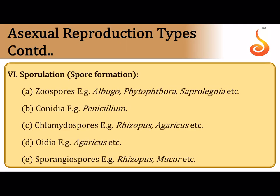Sporulation also comes under asexual reproduction because there is no formation of gametes or fusion. Zoospores are motile spores. Conidia are non-motile thin-walled spores produced exogenously on specialized upright hyphae called conidiophores. Chlamydospores are thick-walled spores helping to overcome unfavorable conditions. Oidia are thin-walled spores obtained by segmentation of hyphae. Sporangiospores come from specialized structures called sporangia and may be motile or non-motile, as in rhizopus and mucor.